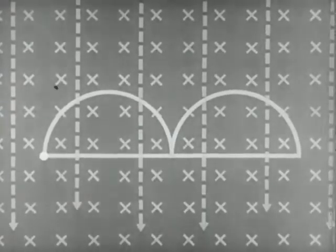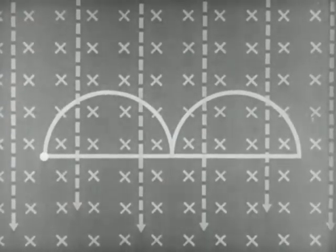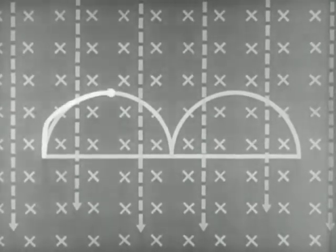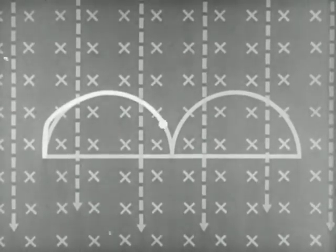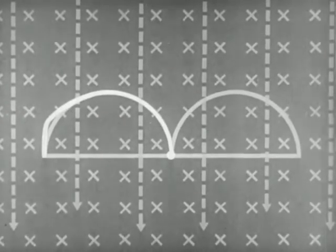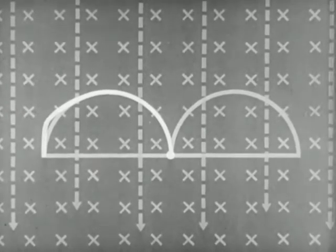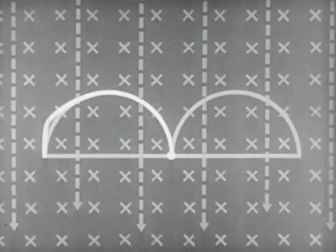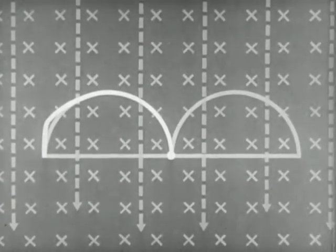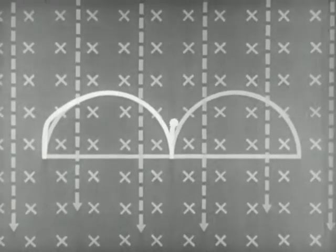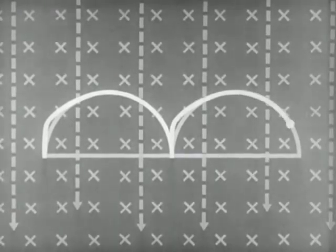An electron starting with zero velocity is acted on only by the electric field and hence starts to move directly upward. As it gains velocity, the magnetic force increases and its trajectory is bent over and down until it returns to zero velocity. The electric field acts on it again and it starts up to repeat the same trajectory.